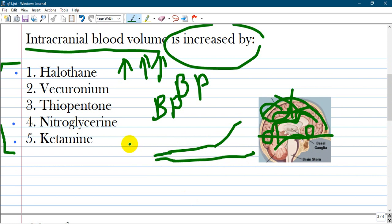You see in front many drugs and their effect on intracranial blood volume. Halothane is the correct answer because it is an inhalational anesthetic, and many of them increase blood volume, but Halothane does more than other inhalational anesthetics.